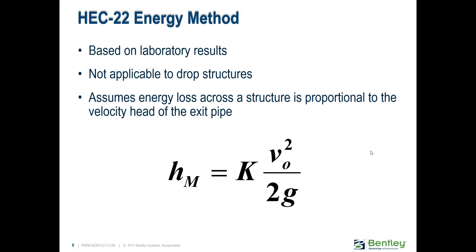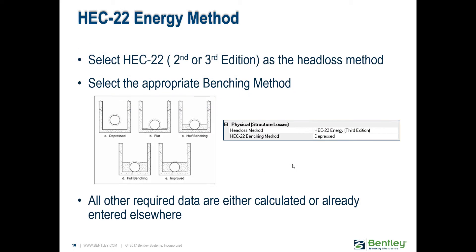More typically in the US, the HEC 22 energy method is utilized — it is based on laboratory results. It does not apply to drop structures, so if you do have a drop structure you have to account for those losses differently. It uses the same equation, with the velocity head of the exit pipe. You don't even have to input the K value; you simply specify the benching method — how your structure is connected to the pipes around it: depressed, flat, half benching — and the software calculates those head losses for you.